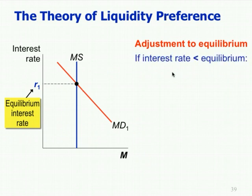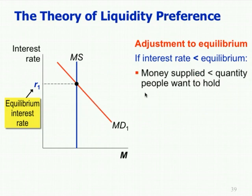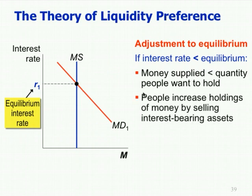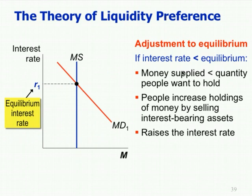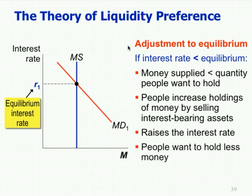Inversely, if the interest rate is below equilibrium R1, then money demand is greater than money supply — people want to hold more money than is out there. You have to take money out of savings, out of bonds, out of illiquid assets and turn it liquid. As people reduce what they have in savings, reducing the supply of loanable funds, that raises the interest rate. As that happens, people slowly want to hold less money until we get back to where money supply equals money demand.